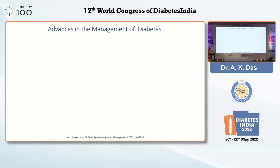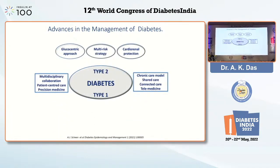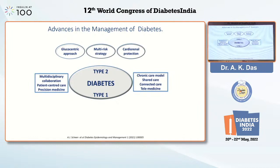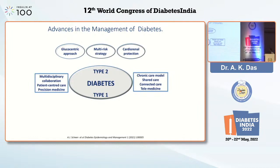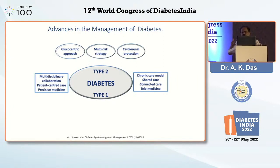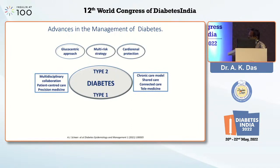If you look at the advances in the management of type 2 diabetes, what is most important today are five aspects. We are moving away from the glucocentric approach to a multi-risk strategy. These are things I have carefully prepared over about 10 days, looking not only toward glucocentric but the cardiorenal protection that is the order of the day in diabetes care today.